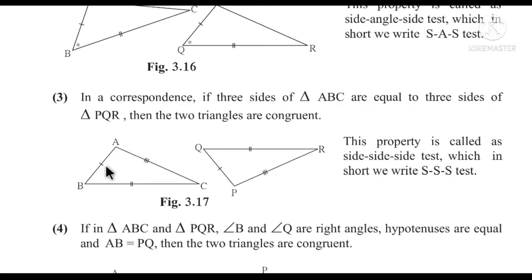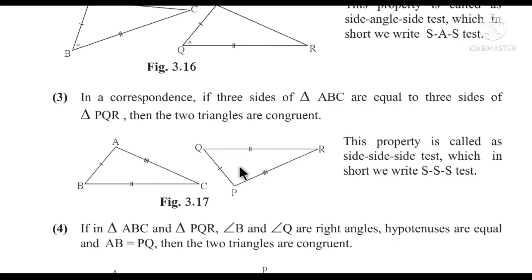Third test: In triangle ABC and triangle PQR, AB ≅ PQ, BC ≅ QR, and AC ≅ PR. All three corresponding sides are congruent. Therefore, two triangles are congruent by the Side-Side-Side (SSS) test.